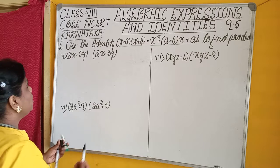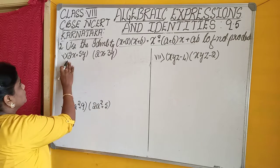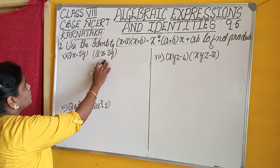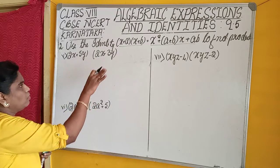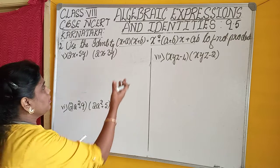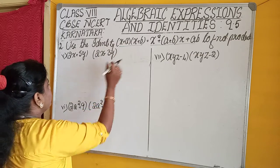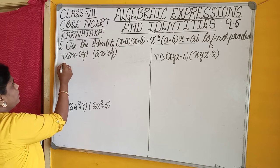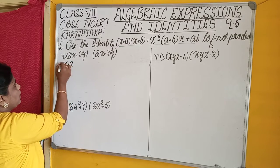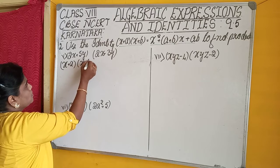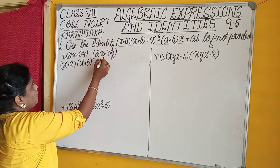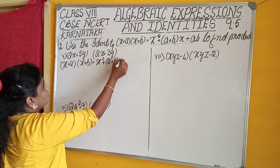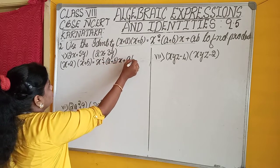Now let us take two binomials: (2x+5y) into (2x+3y). We are checking the values of x, a, and b. We have to use our identity: (x+a)(x+b) = x² + (a+b)x + ab.